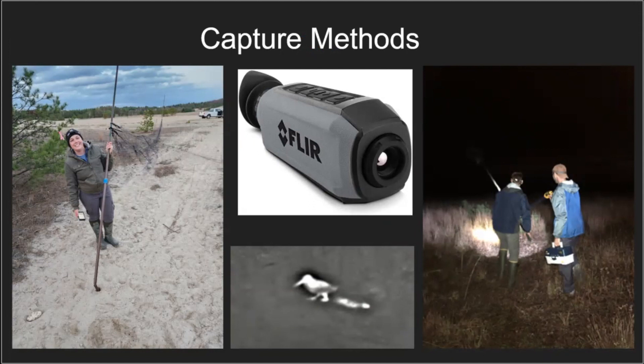In order to track them, we first have to capture them, and we do this in two ways. The primary method is using a mist net and an audio lure. The mist net — you can see in this picture — is a very long and tall net composed of very tiny, thin threads, invisible to birds especially when they're distracted. We set this system up near a singing male, in hopes that the male will become curious and territorial, come in to investigate the perceived threat, fly into the net, and then we can take it out and process it.